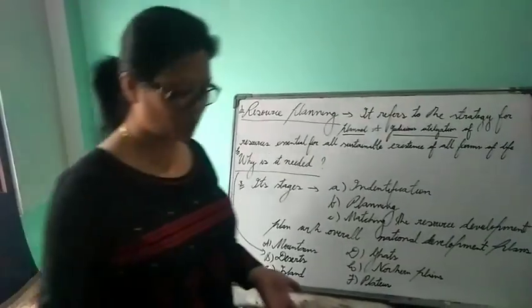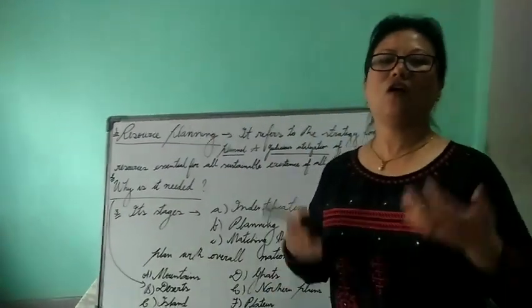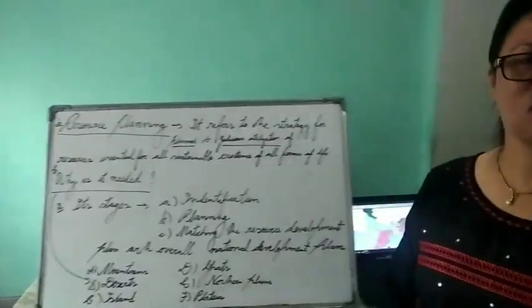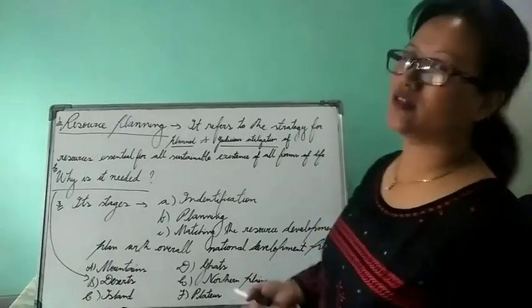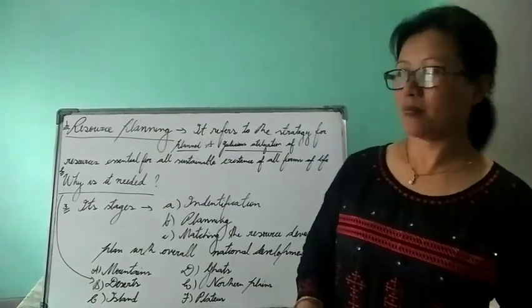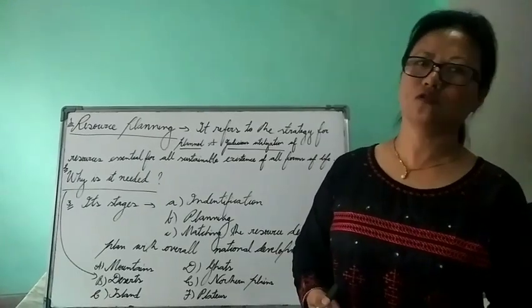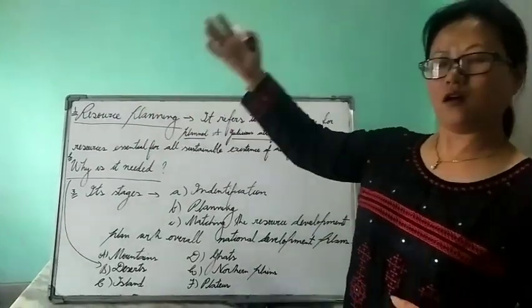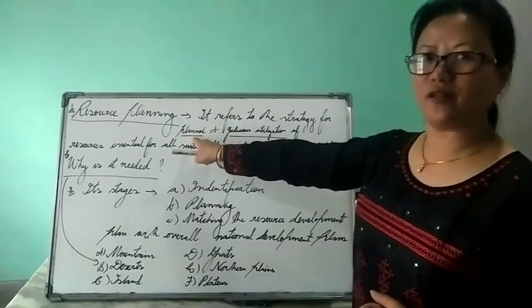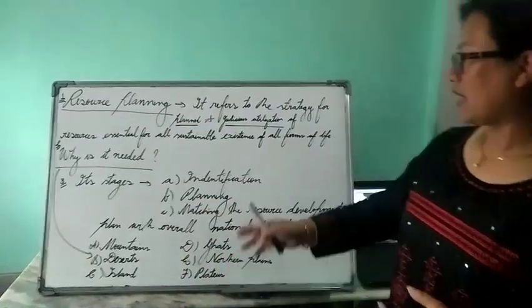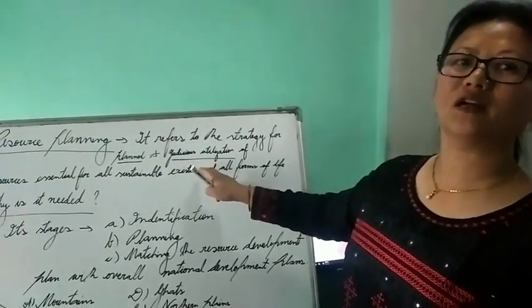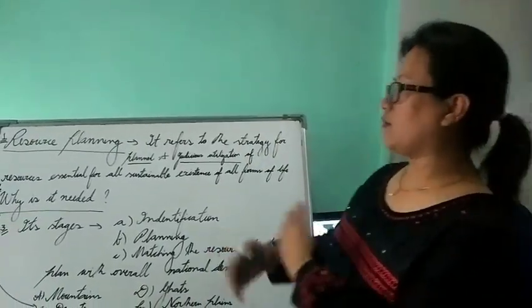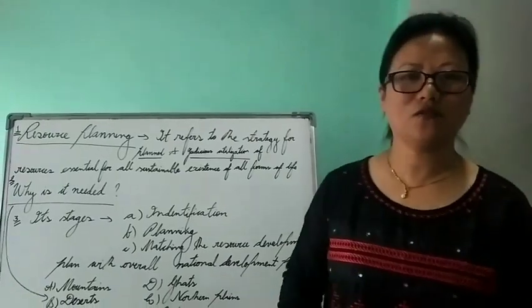It refers to the strategy for planned and judicious utilization of resources essential for sustainable existence of all forms of life. It means we all, even the animals, need resources to live properly. Here we are talking about Indian geography. In India, there are many resources available and everybody needs to use different types of resources to sustain properly, to live life properly.